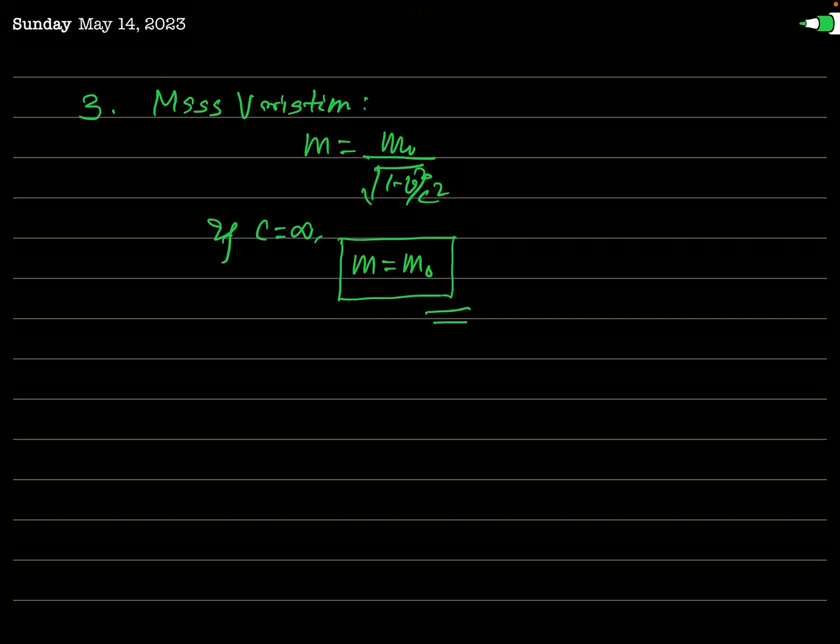Newtonian mechanics will not fail if C equals infinity. But unfortunately, C is not infinity — it is finite. So Einstein felt the need to change the concept of space and time and proposed special relativity. But by chance, if there were a world where C is infinity, in that world there would be no need for special relativity — that world would work satisfactorily well within Newtonian mechanics. So I hope you have understood that when C is infinite, there is no need of relativistic mechanics; our Newtonian mechanics works well in that world. Thank you very much.